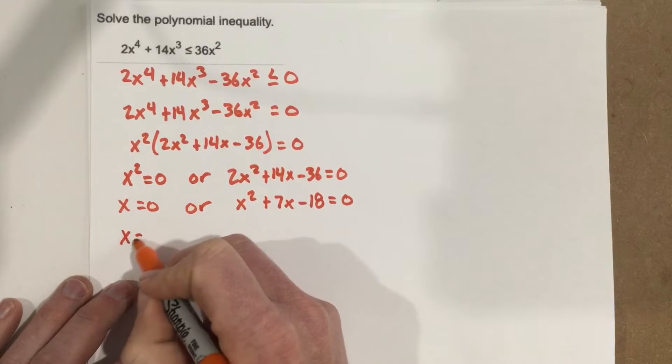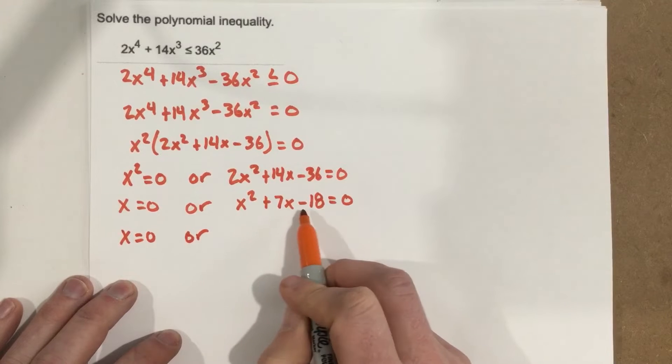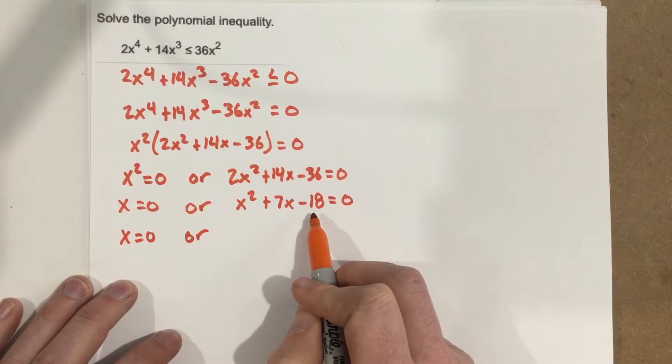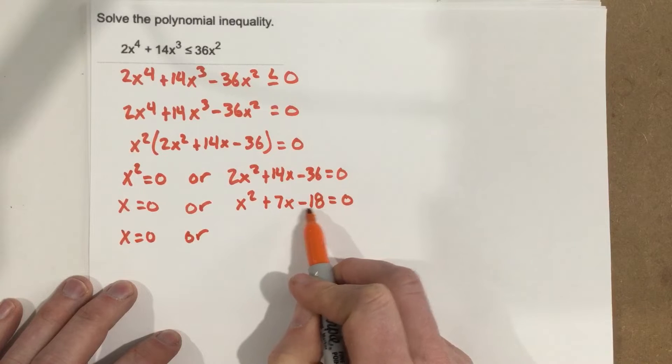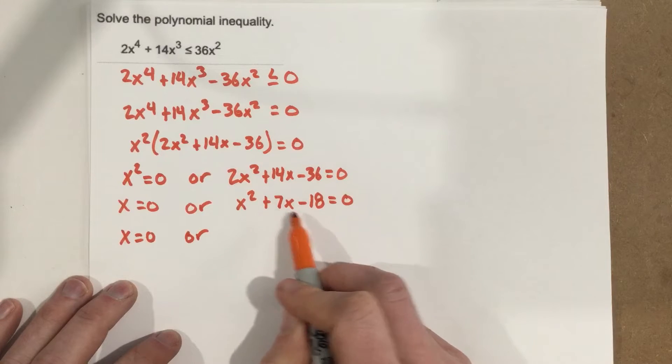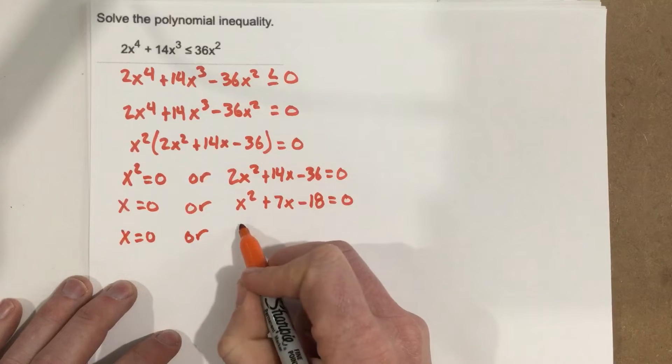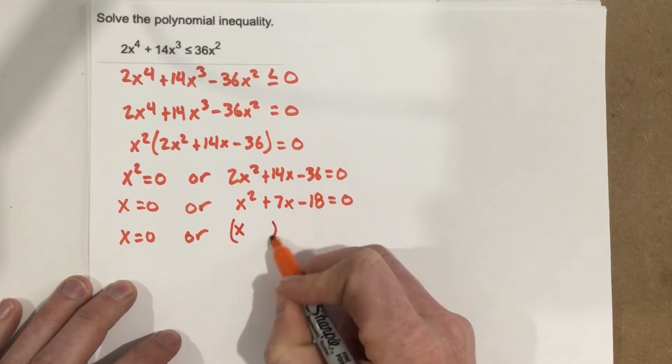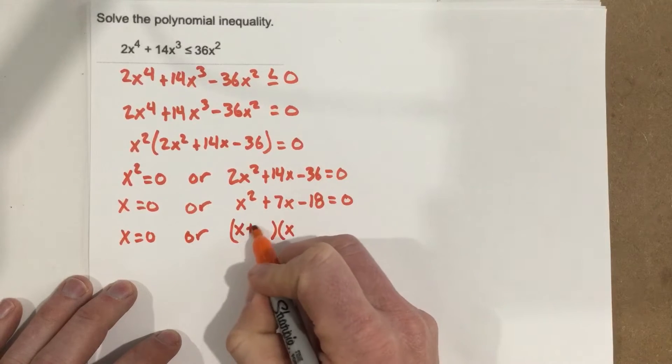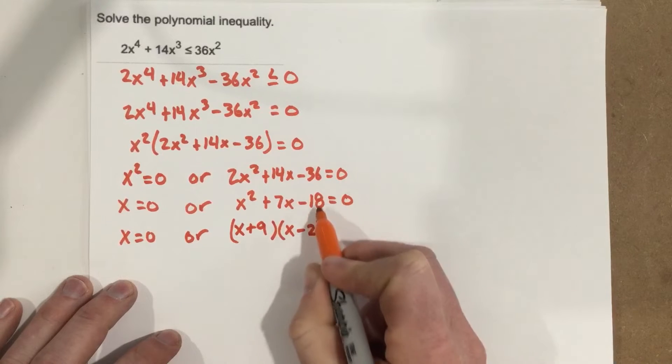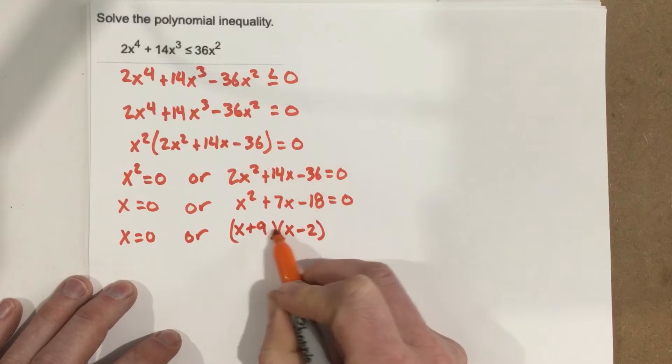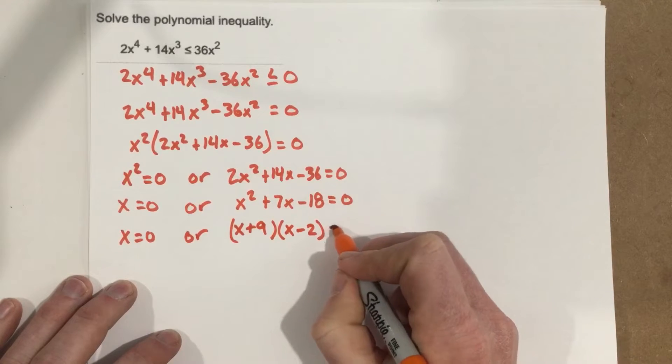So x equals zero or at this point here, let's see if we can factor this. I know factors of 18 are 9 and 2. So if I make the 9 positive and the 2 negative, that would give me negative 18 and that would give me 7. So I'm going to say x plus 9 and x minus 2. And you can see that 9 times negative 2 is negative 18. 9x minus 2x is the 7x.